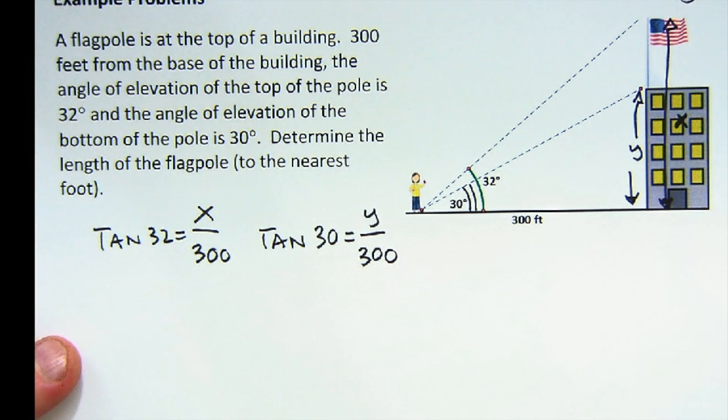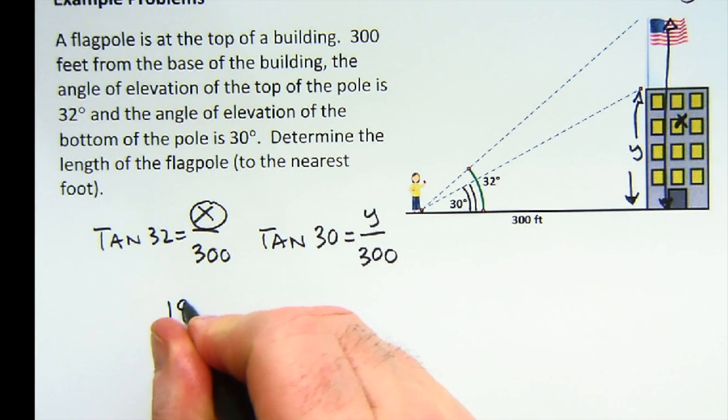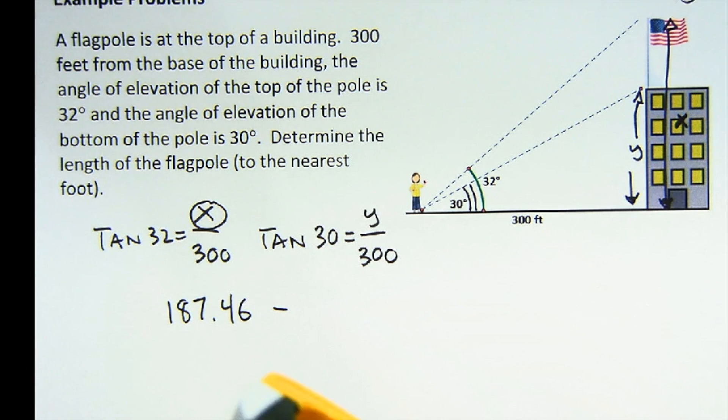So what I'll do now is I'll do the quick calculation. Remember when this is in the numerator, we just multiply these together. So the tangent of 32 times 300 is 187.46, and I'm going to subtract the tangent of 30 times 300, which is 173.21.